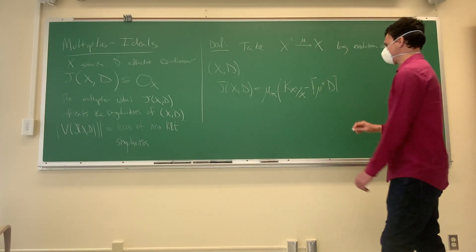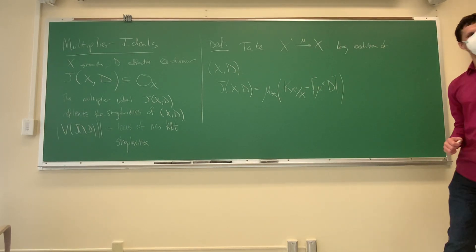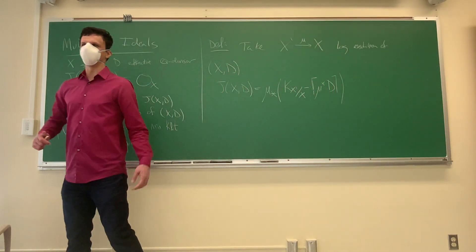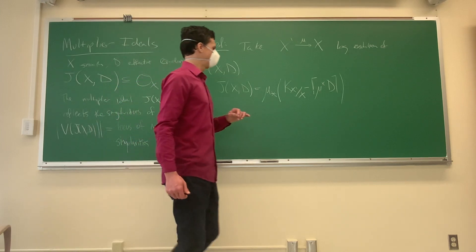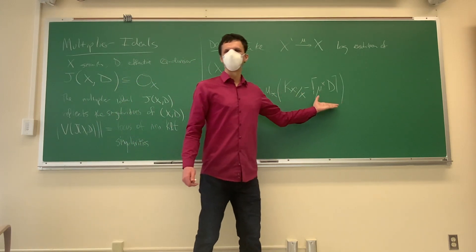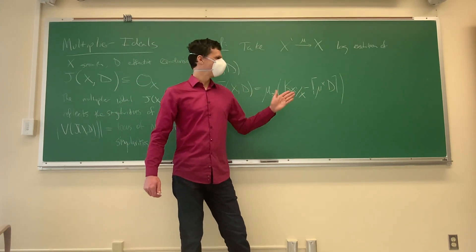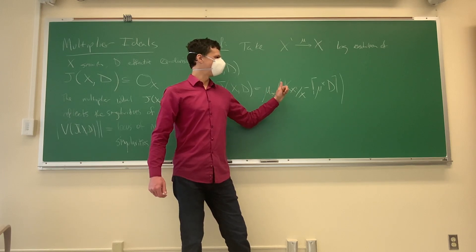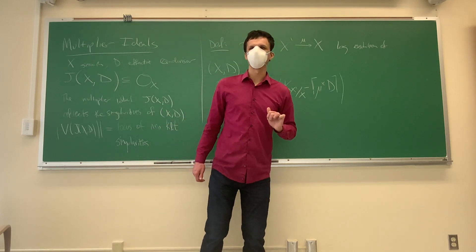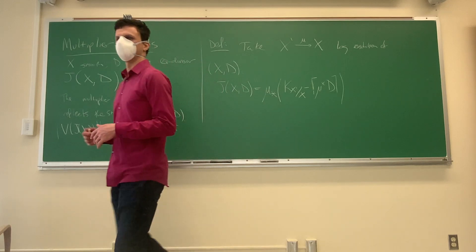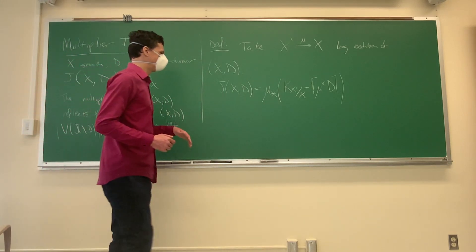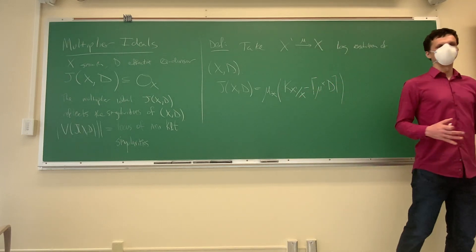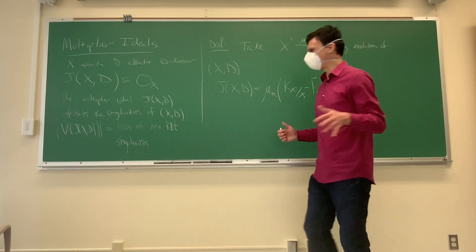We define J(X, D) to be μ_* of O(K_{X'/X} minus the rounddown of the pullback of D). If there's no D whatsoever, we're just taking the push-forward of K_{X'/X}, and by relative vanishing theorems there's no higher cohomology, so we just get the structure sheaf back.